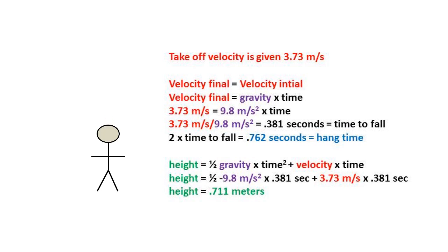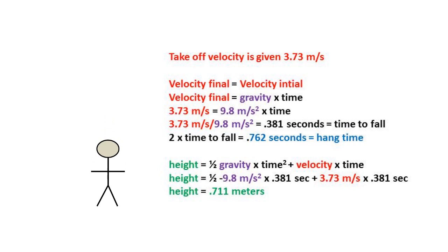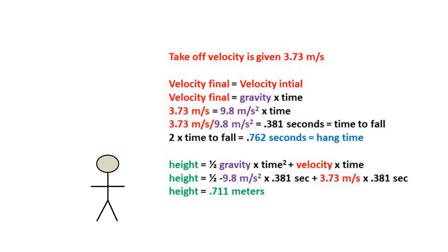Now let's solve for the height. Using the position formula of one half gravity times time squared plus velocity times time, we plug in all of our numbers and get a height of 0.711 meters.